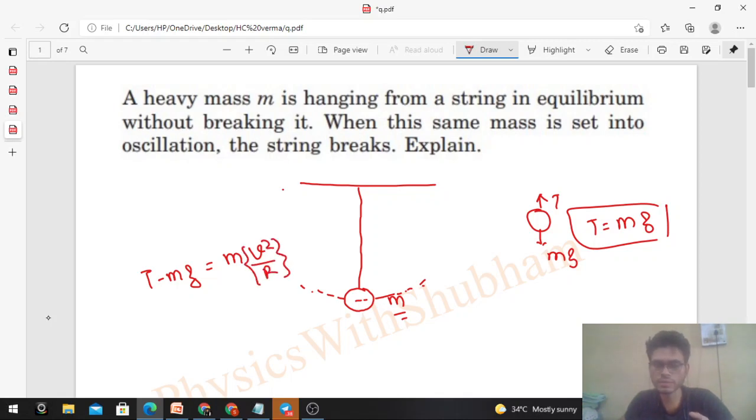The centripetal acceleration direction is towards the center. So when it's at the bottom position of this curvature, it will have some velocity, and acceleration will be towards the center where the string is attached. The radius will be the length of this string, so from this you will get the value of tension slightly greater than the previous value. Therefore, because the tension is increasing in the string, it may break.